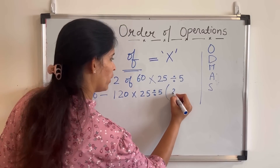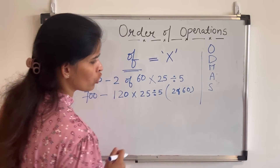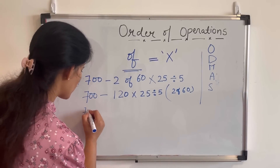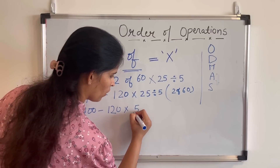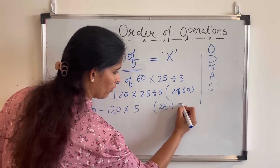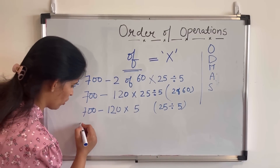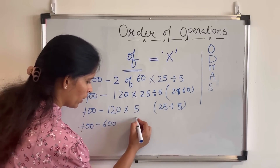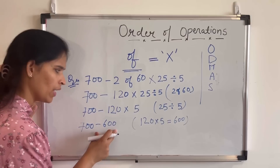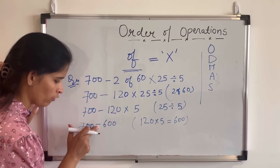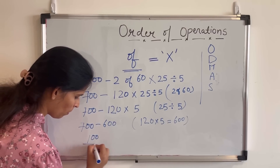After solving 'of' to get 120, the next step as per DMAS is division. So 25 divided by 5 is 5. Then comes multiplication: 120 multiplied by 5 is 600. Now the last operation is subtraction: 700 minus 600 is 100. So my solution is 100. We always use this rule to solve our mathematical problems whenever we have many mathematical operations.